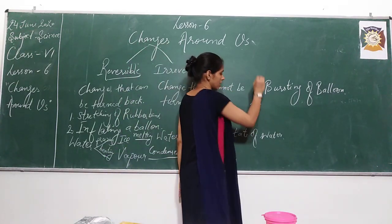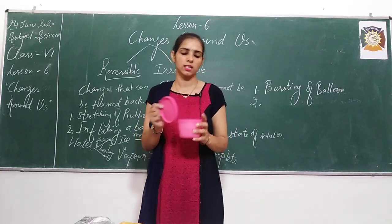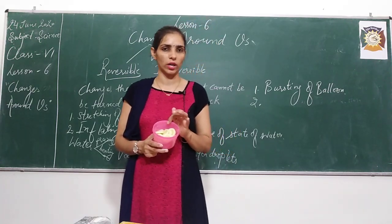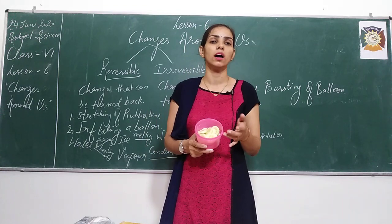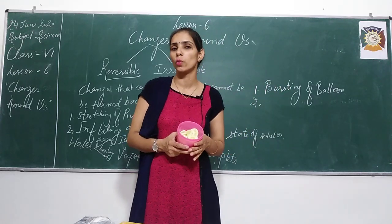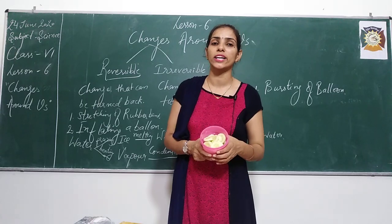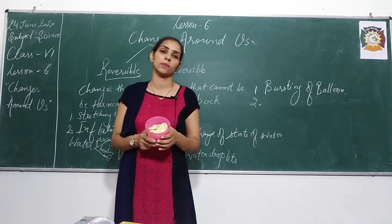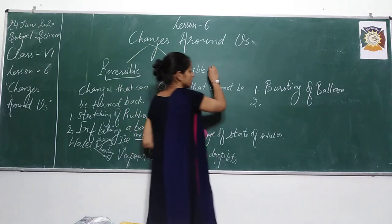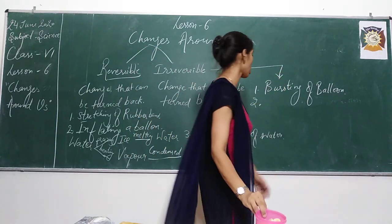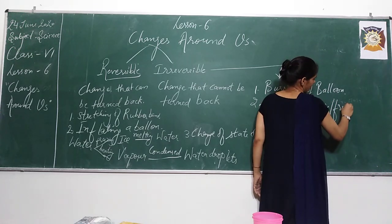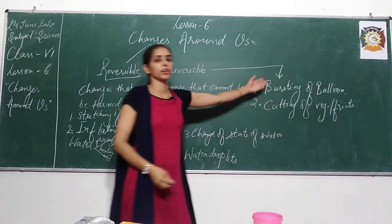Now next, you can see I am having some vegetables here — some cucumber. I have cut the cucumber into various pieces. Now, can I join all these pieces to form the same cucumber again? No, it cannot be joined. So the change cannot be turned back — it is an example of irreversible change. Cutting of vegetables or fruits is an example of irreversible change.